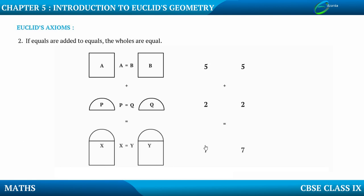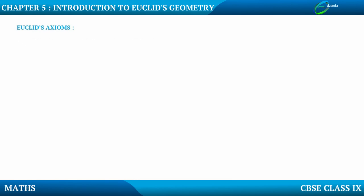Similarly, in this example with numbers: 5 was equal to 5, and 2 is equal to 2. When we added 5 and 2, we got 7. Again, when we added 5 and 2, we got 7. That means when equals are added to equals, the wholes are equal.